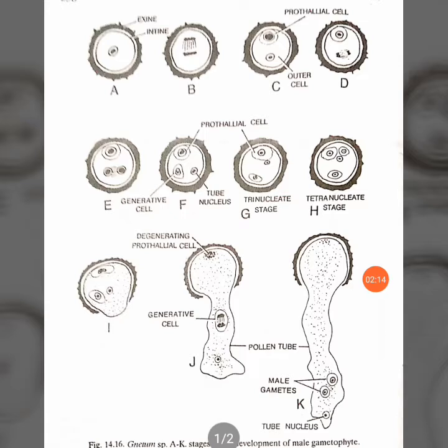Before pollination, the microspore germinates in situ — meaning inside the microsporangium itself, inside the male cone. As seen in figure B and C, it divides to form a small prothallial cell and a large outer cell. The nucleus of the prothallial cell is enclosed within a sheath, a covering, as visible in figure C.